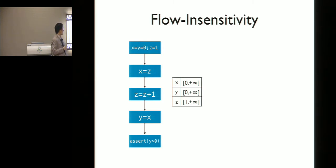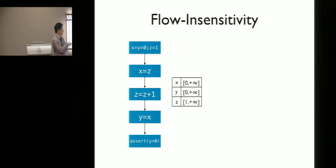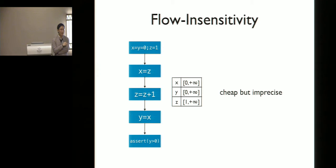On the other hand, a flow-insensitive analysis takes a quite crude approach. Instead of computing different abstract states at each different program point, the analysis computes a single abstract state valid for all program points. For example, an interval domain based flow-insensitive analysis computes an abstract state where X and Y have interval zero to infinity and Z has one to infinity. This analysis is very cheap and scales to large programs, but the problem is that it is typically too imprecise to be useful. In this case, with this analysis result, we cannot prove the assertion.